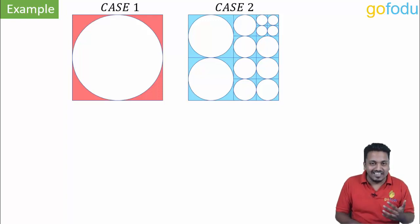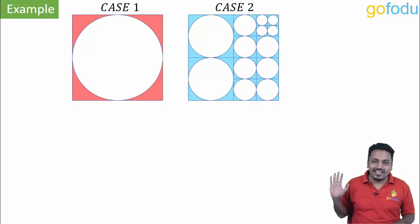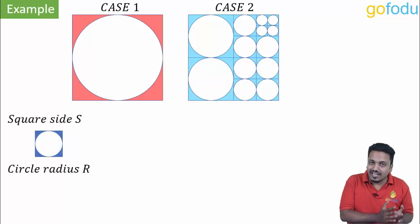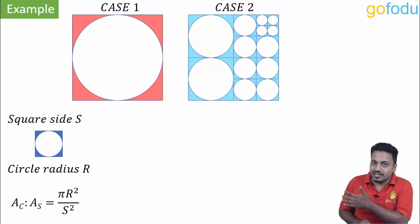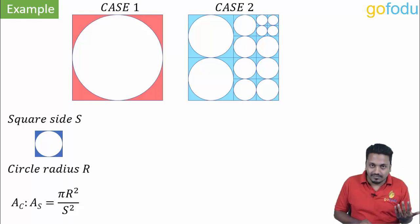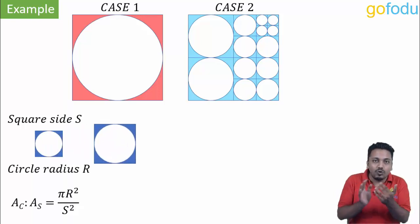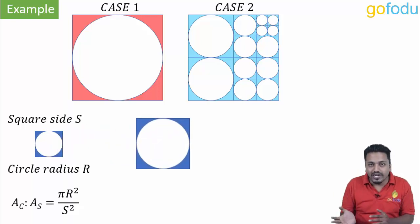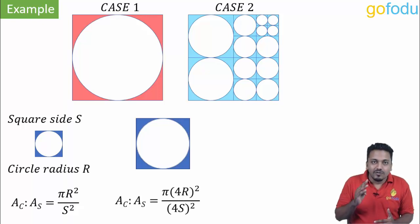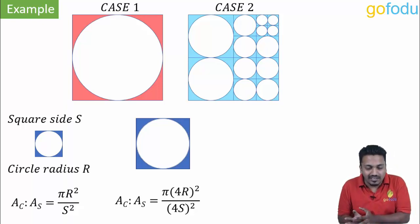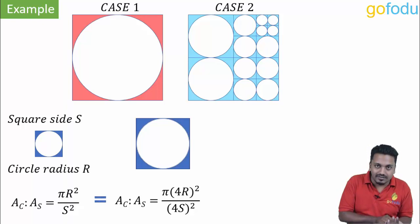Now as I have been saying again and again, most of the times these two areas are equal. But why? For a general case of a circle of radius R inside a square of side S, this is the ratio of area of circle to area of square. Now if I scale up the diagram four times, the new side of square will be four times the old side and new radius will also be four times the old radius. And when we take the ratio of areas, four square and four square will get cancelled and we get the same old ratio.